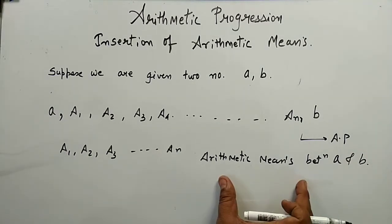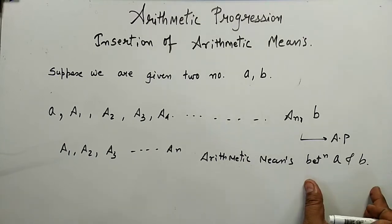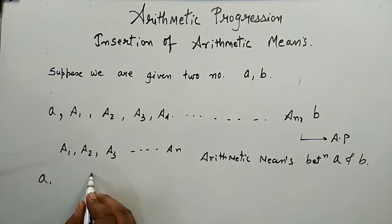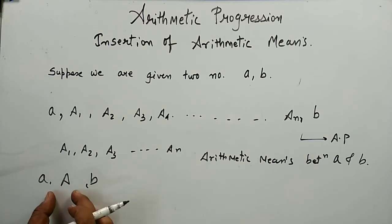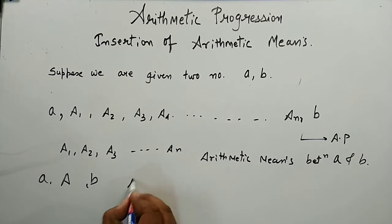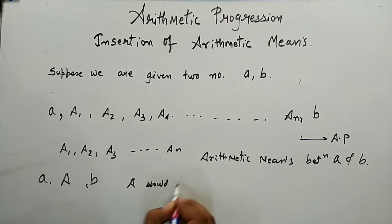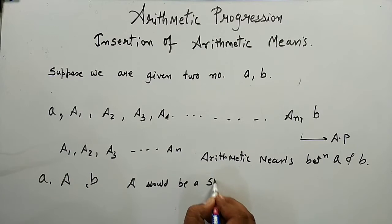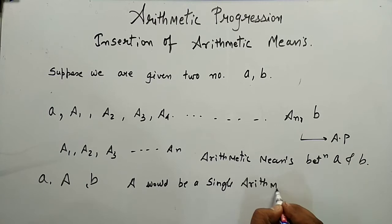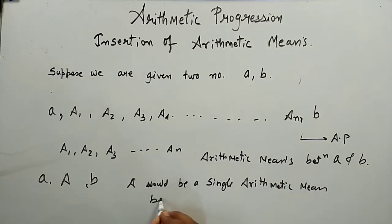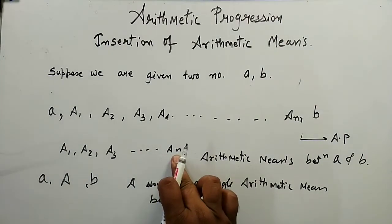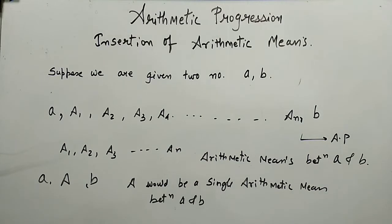So a1, a2, a3 up to an will be the arithmetic means between a and b. If we are given two numbers a and b and we have inserted a single number A, then A would be a single arithmetic mean between a and b. And here we have n arithmetic means between a and b.